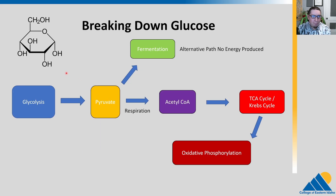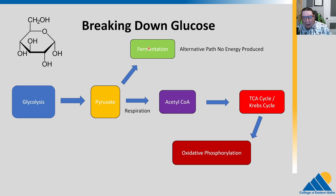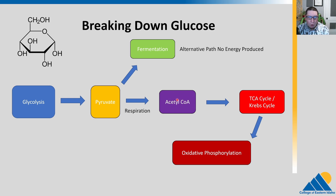Looking at our overall diagram: we went through glycolysis, generated pyruvate, moved into the mitochondria — this is a eukaryote — and chopped off one of those carbons to make acetyl-CoA. There is also a side reaction some organisms do called fermentation; we'll come back to that later. We're following the respiration pathway: pyruvate → carbon removed → acetyl-CoA, storing some of that energy in a high-energy electron carrier. Acetyl-CoA then moves into the TCA cycle, also called the Krebs cycle or citric acid cycle — three names for it.